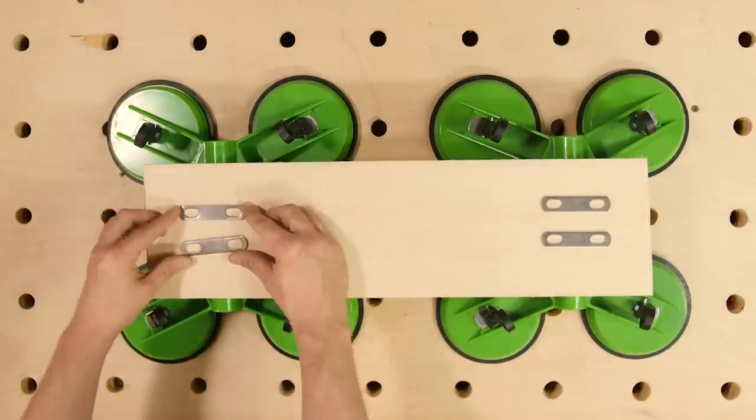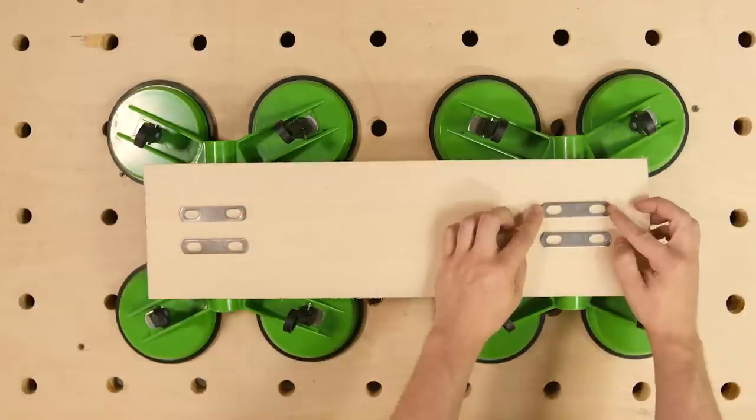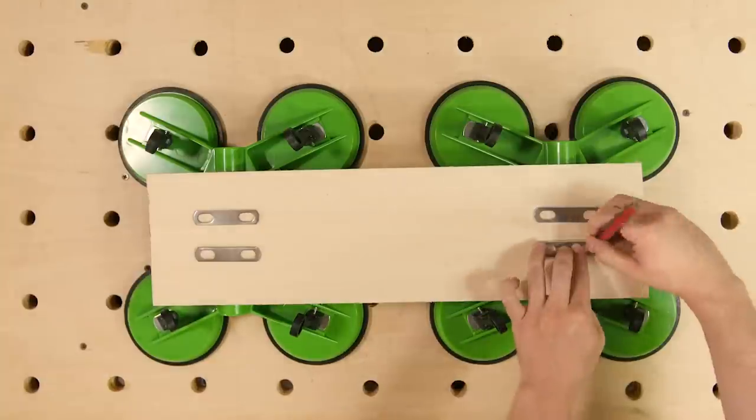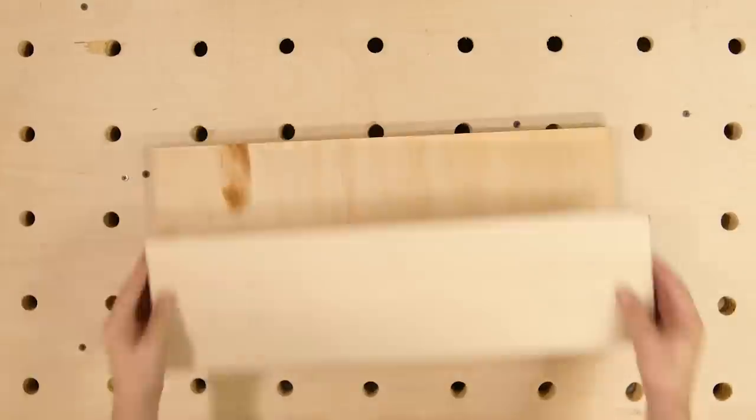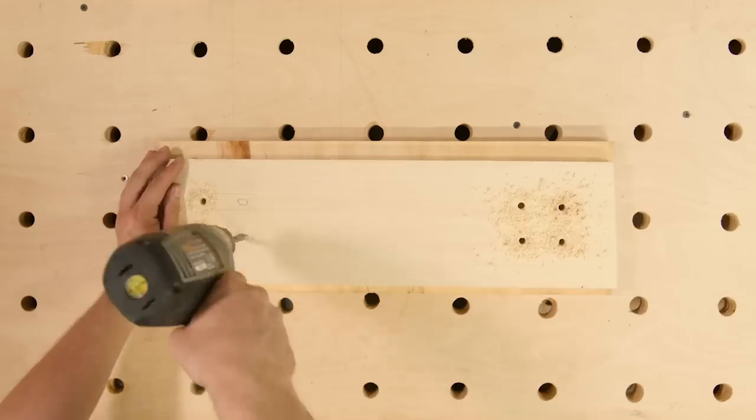Select where you want the hardware to be placed, giving enough space to keep the platform integrity but within the space provided by the handle. This doesn't have to be too precise. Drill your holes and the hard part of assembly is over.